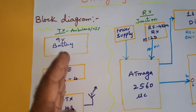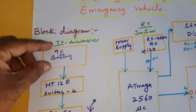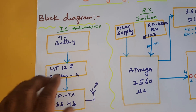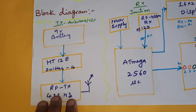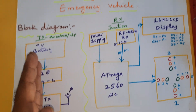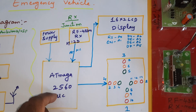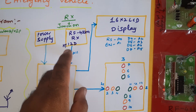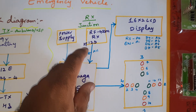In the transmitter part, let us assume ambulances, VIP vehicles, or any emergency vehicle. The transmitter part consists of a 9-volt battery, HT12E encoder with four switch buttons: Lane 1, Lane 2, Lane 3, Lane 4, and an RF 433 MHz transmitter module. The transmitter will transmit the data and the receiver will receive the data.